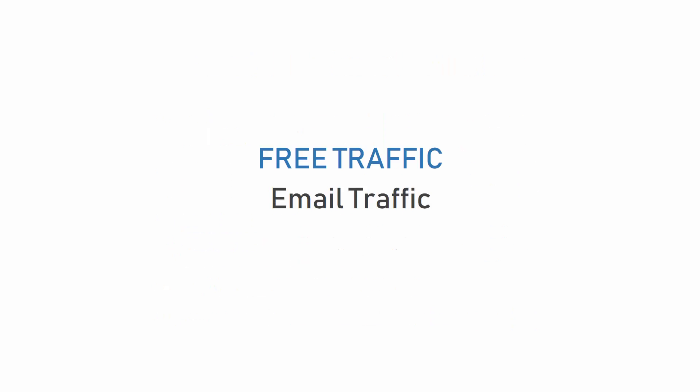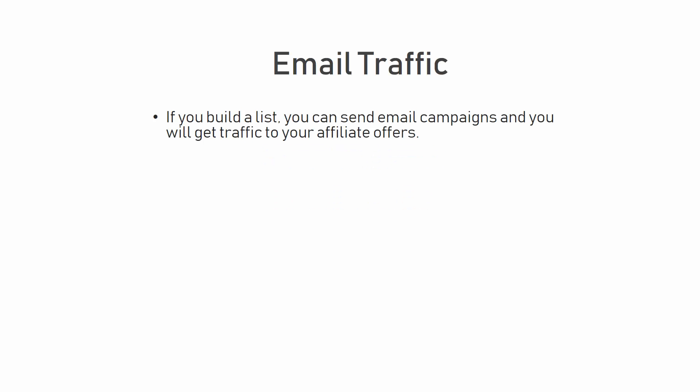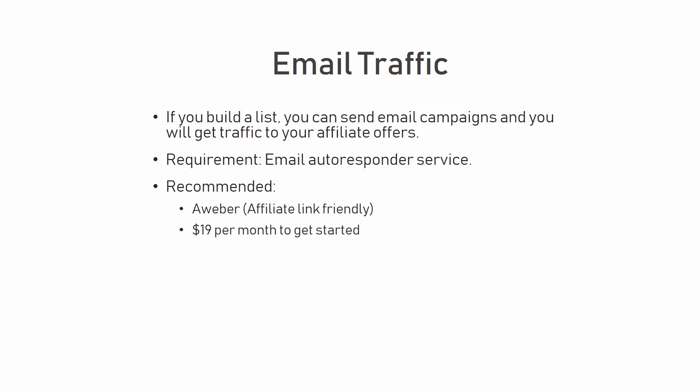For the third type of free traffic, I want to talk about email traffic. If you build a list, you can send email campaigns and you will get traffic to your affiliate offers. Although there are some costs involved with email marketing — these costs include an email autoresponder — even with some services you can actually start for free. However, the cost of email marketing is not high. I recommend Aweber for two reasons: it's easy to use and it's affiliate link friendly. And the total investment you need is just $19 per month to get started with Aweber.